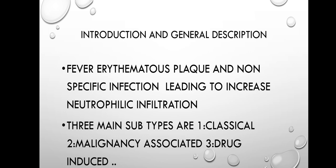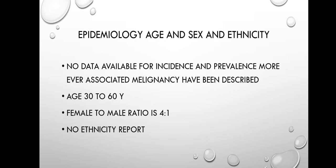There are three main subtypes: number one, classical; number two, malignancy-associated; and number three, drug-induced. Regarding epidemiology — age, sex, and ethnicity — no data is available for incidence and prevalence. Age is usually about 30 to 60 years. The female to male ratio is about 4:1, and no ethnicity reports have been noticed.